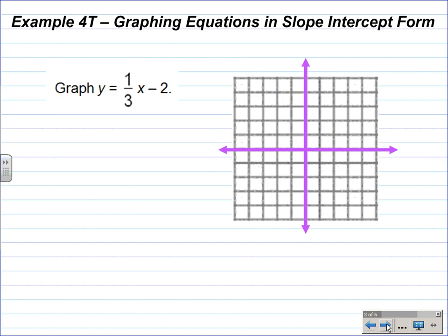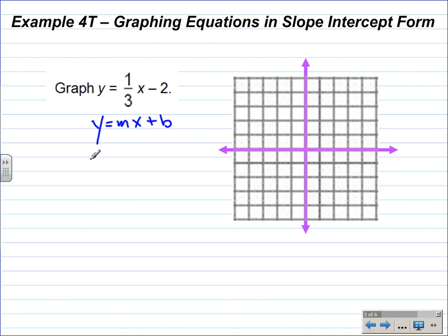Example 4T: graphing equations in slope-intercept form. Coming back to slope-intercept form, y is equal to mx plus b. The equation is y is equal to 1/3 x minus 2. As we saw previously in Part 1 of Lesson 6-2, this can be rewritten as y equals 1/3 x plus negative 2, so we have it in exact slope-intercept form. b in this case is negative 2.